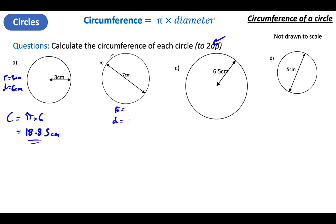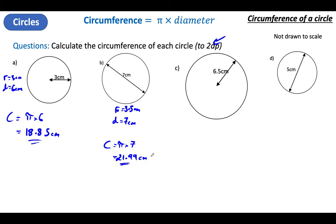R equals, D equals. This is a diameter because it goes all the way across. In that case, what would the radius be? It would be half of that, which is 3.5 centimeters. I need the diameter, so it's Pi times by 7. 7 Pi to two decimal places is 21.99 centimeters.